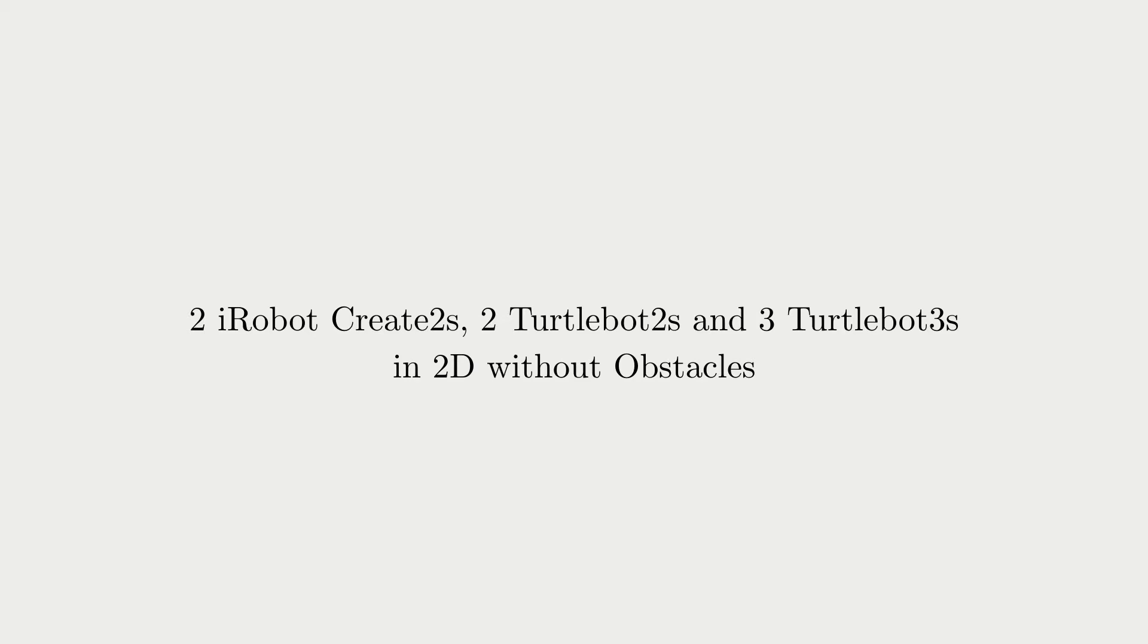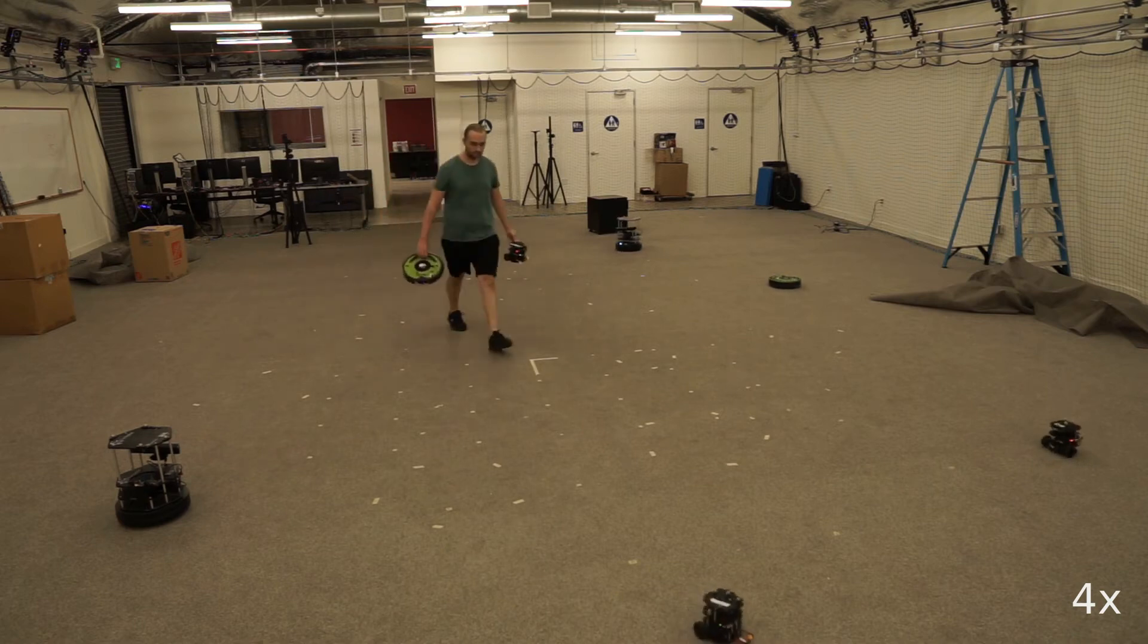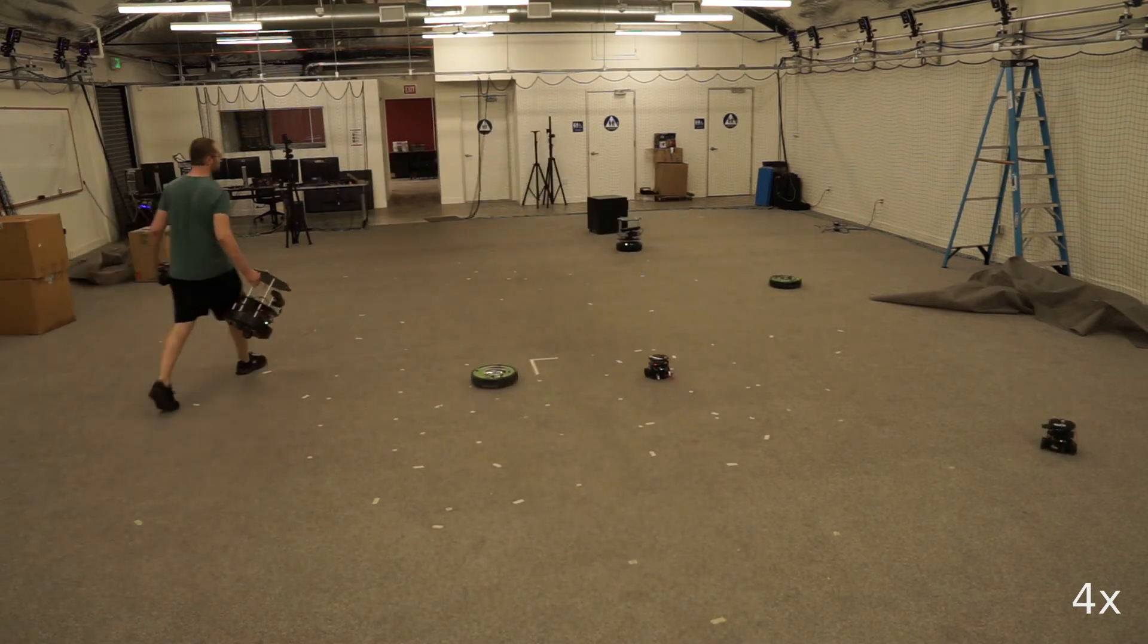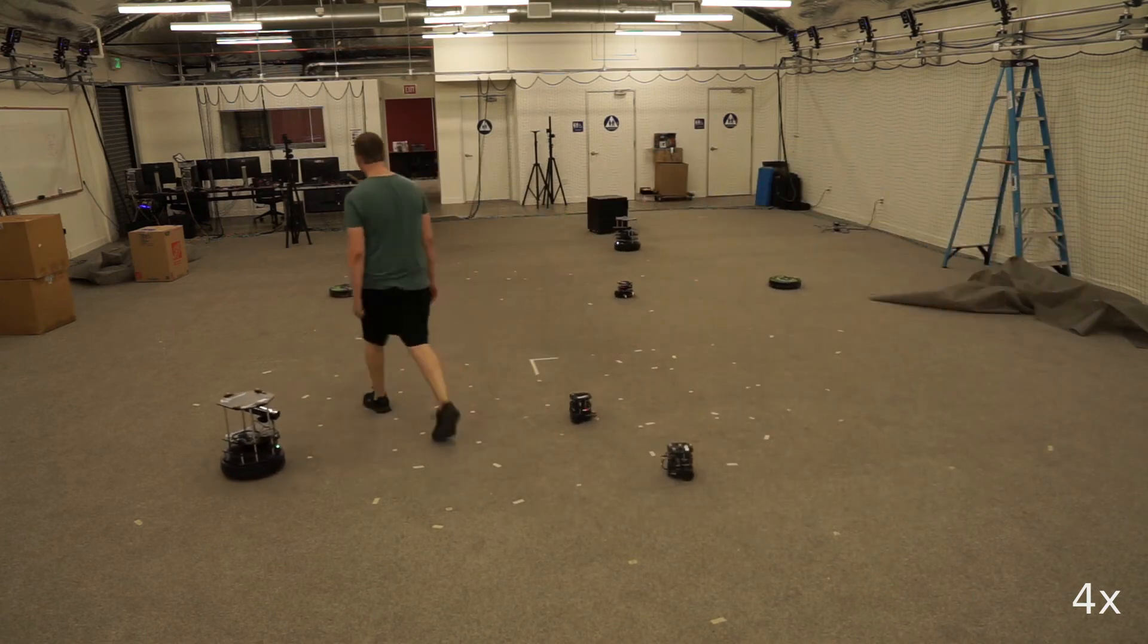We also implement RLSS for 2D and show it on a heterogeneous team of robots in an environment without obstacles. Each robot is tasked with going to their goal positions. A human moves robots away from their goal positions for them to navigate back.